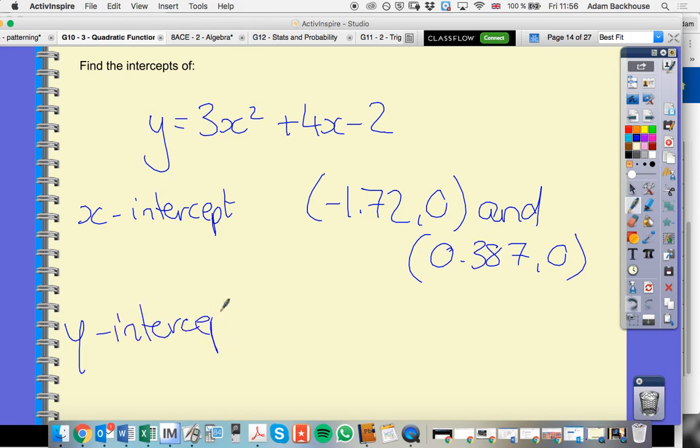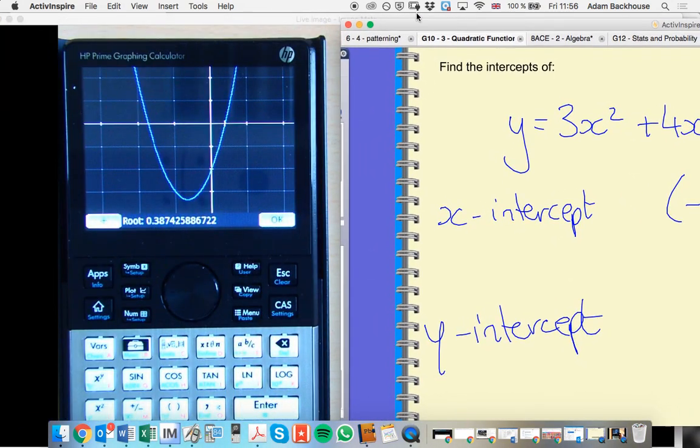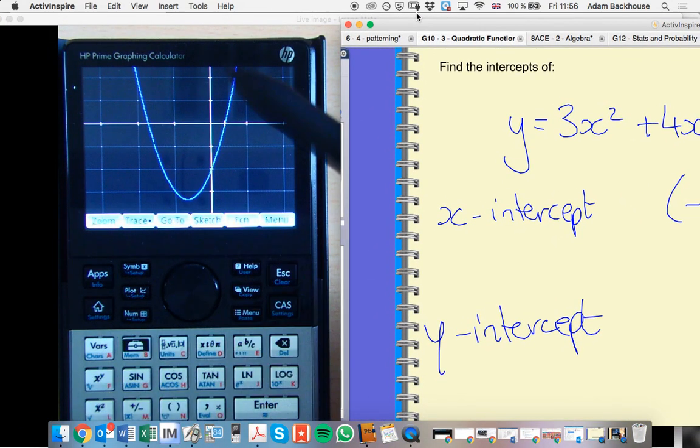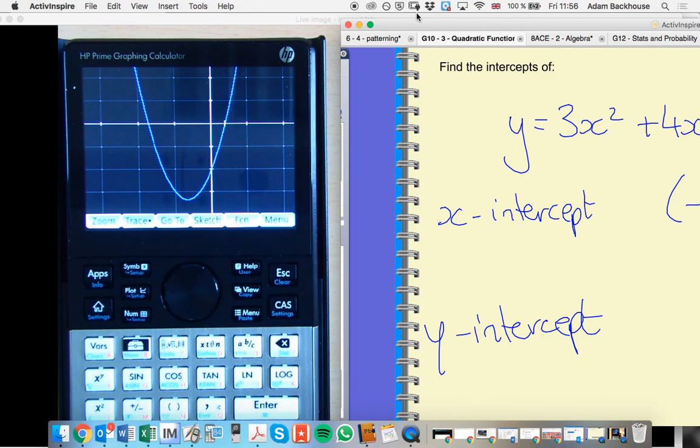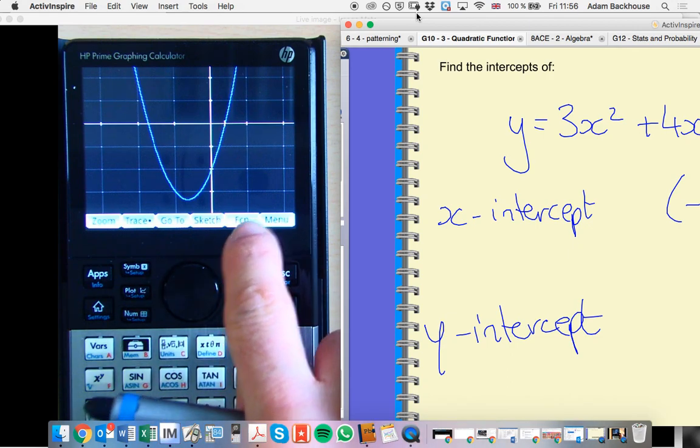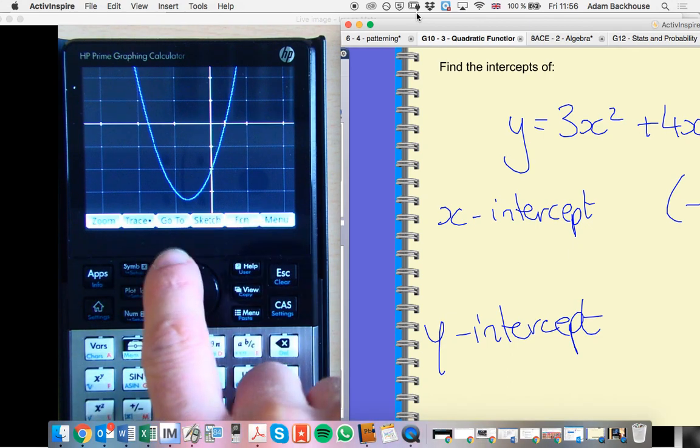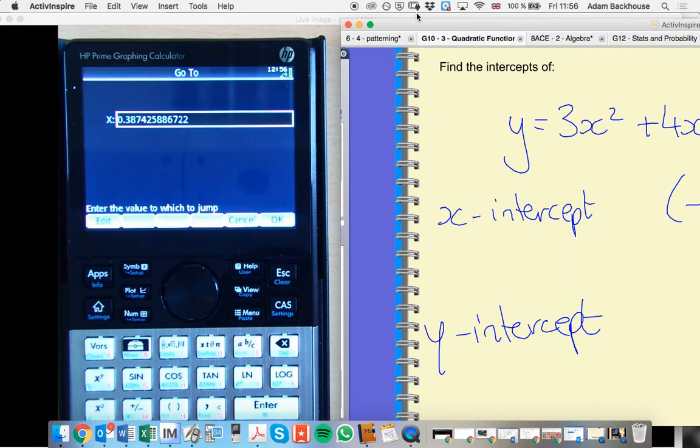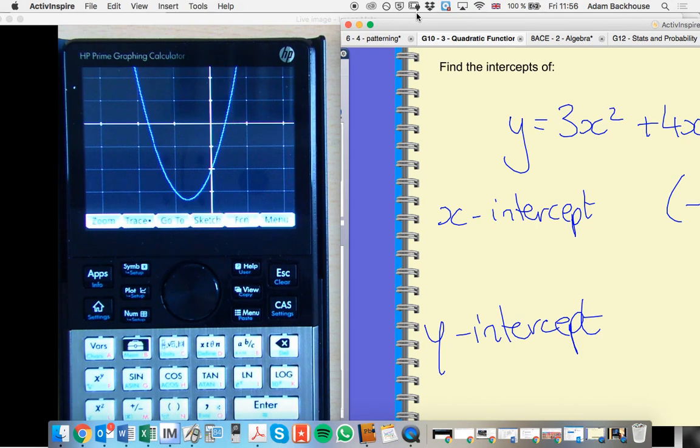And we have our y-intercept. Okay, so one way of finding the y-intercept, if you're not happy just looking at it from the function, is rather than going to the FCN part of this menu, we go for the go to. We know if we're on the y-axis, the x-coordinate is going to be 0. So we're going to go to x equals 0. Let's enter that.